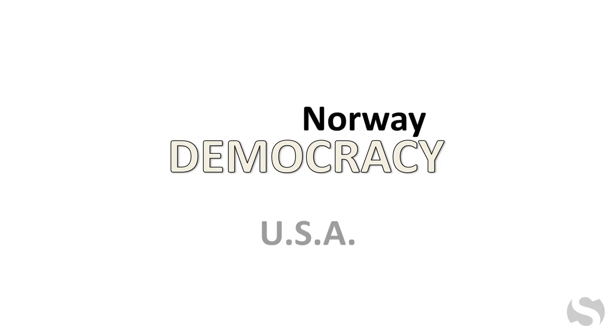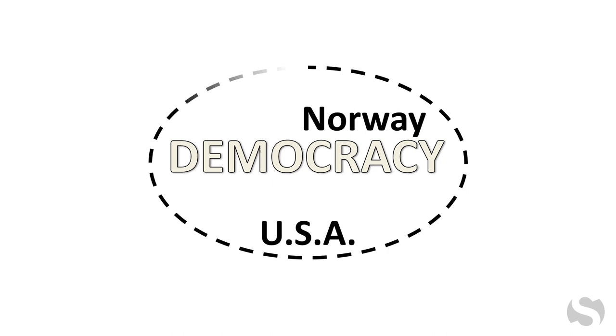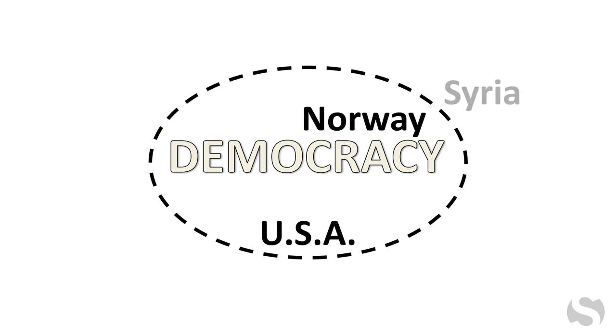Here's an example from Social Studies or History: Democracy, which is defined by critical features such as representative government and independent judiciary. Knowing these critical features enables grouping nations into the democracy category or concept, and distinguishing them from non-democracies.